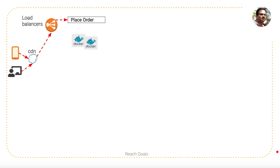From the load balancer, it connects to the microservices. I have a service called Place Order, which takes the order from the customer and sends it to the Order Management System. I put this Place Order service in a Docker container so that it can be horizontally scaled. For horizontal scalability, I can have a Kubernetes cluster orchestrated with the help of Kubernetes to scale up or scale down.